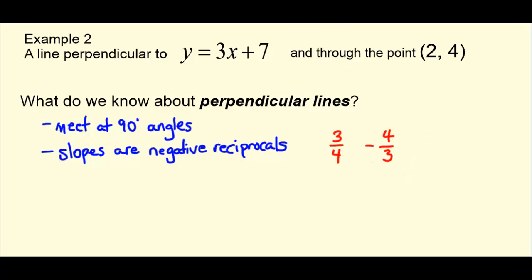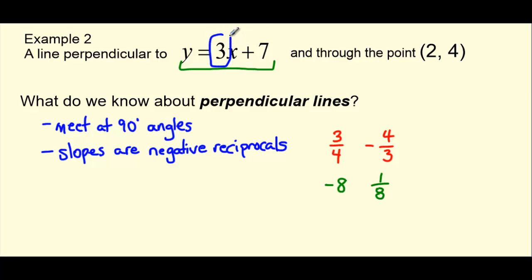If we had a whole number like negative 8, the negative reciprocal would be positive 1 over 8, because we need to switch signs. So now that we know what perpendicular lines are and how their slopes relate, we can find the slope for our line by realizing it has to be perpendicular to y equals 3x plus 7. The slope there is positive 3, so our perpendicular slope will be negative 1 third — that's the reciprocal of 3, but negative.